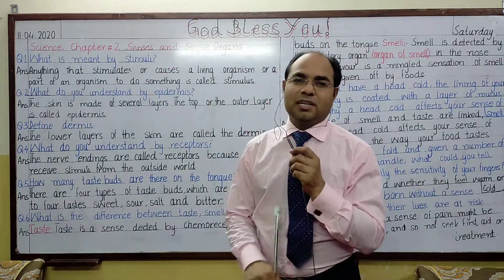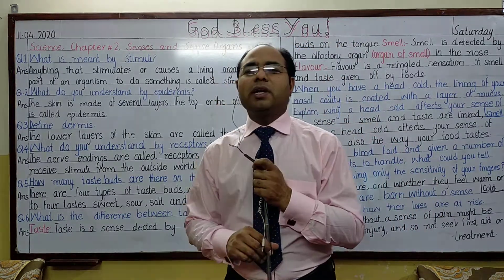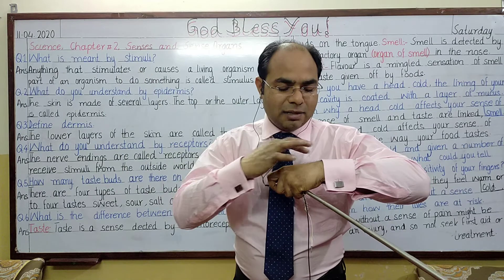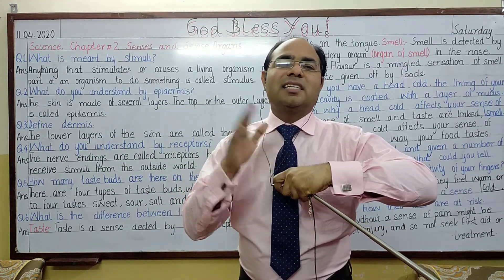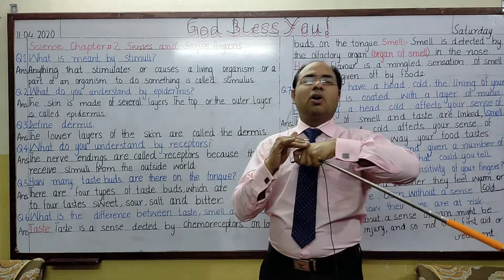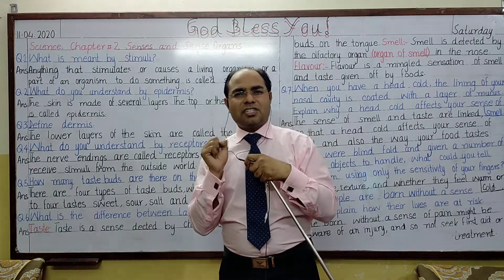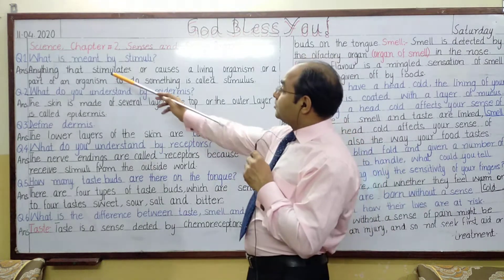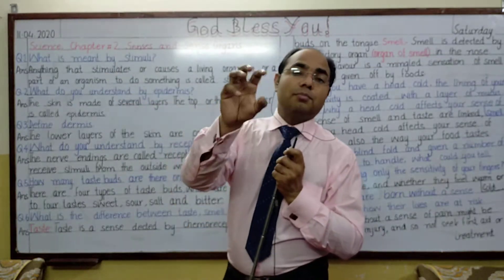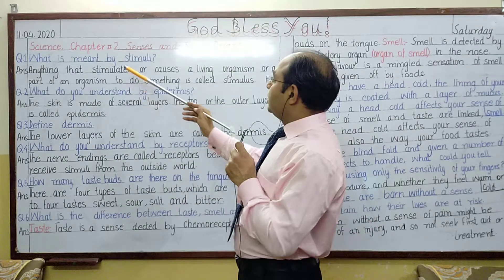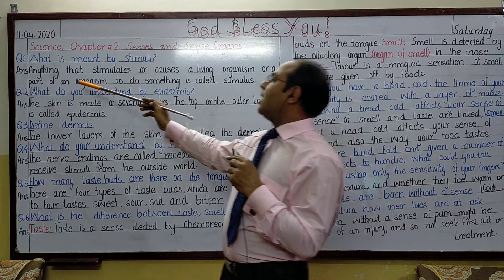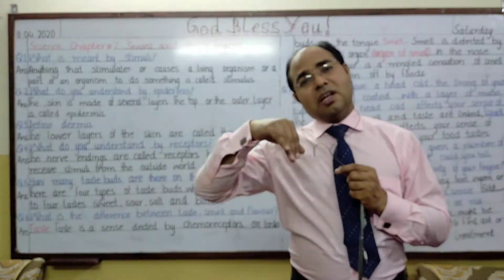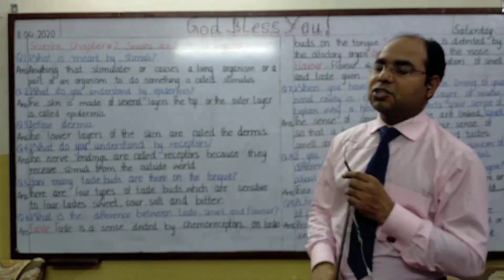Question number 1: what is meant by stimuli? For example, if this is my hand and I hit something, then that hand is the stimuli and the place where I hit has received the stimuli — that place is called a receptor. So stimuli means anything that has an effect on an organism, anything that stimulates or causes a living organism or a part of it to do something. That is called stimulus. Stimulus is the singular form; stimuli is the plural.